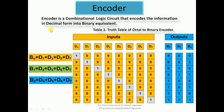First of all, let us discuss what is an encoder. Encoders do not have a general design — the design depends upon the requirement. In this particular slide we have discussed an encoder which converts information in octal form into its binary equivalent. You can see the inputs are from d0 to d7, representing decimal equivalents 0 to 7, and the output is shown in binary form as b0, b1, b2.